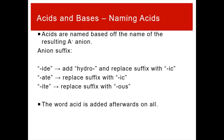Acid naming is based entirely on the resulting A- anion — once the hydrogen leaves, the anion left over drives the acid's name, specifically based on that anion's suffix. If the anion ends in -ide, use 'hydro-' in front of the element name and replace -ide with -ic acid. If the anion ends in -ate, drop -ate and add -ic acid. If the anion ends in -ite, replace -ite with -ous acid. Let's look at some examples.